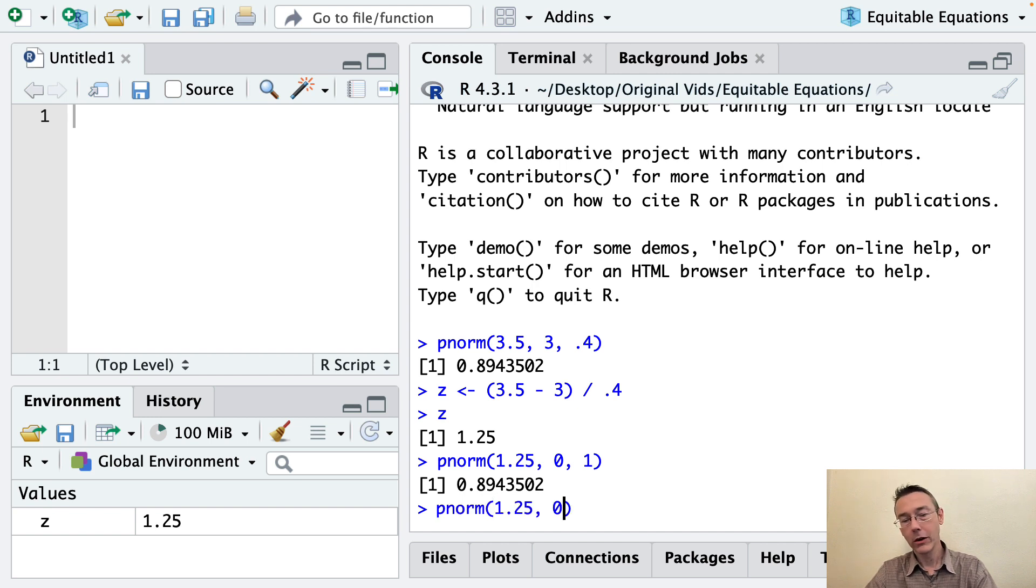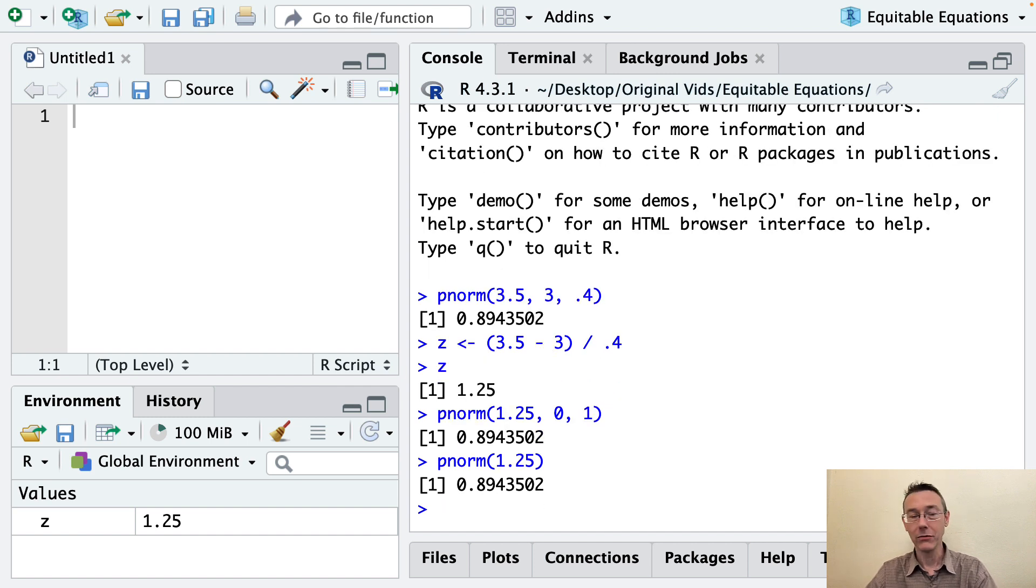Now the way pnorm works in R is that that mean of 0 and standard deviation of 1 are default values, so we could just leave those out and we still get the 89.4%. So that's just an equivalent way of doing this same problem.